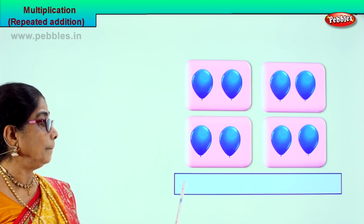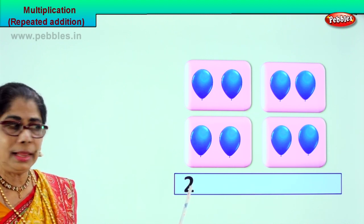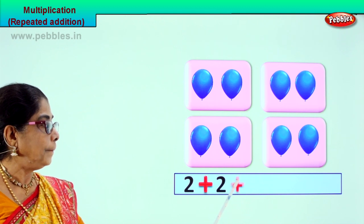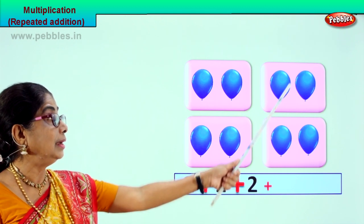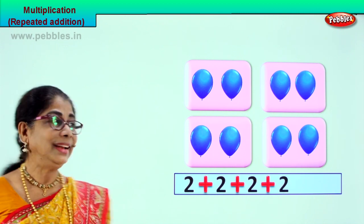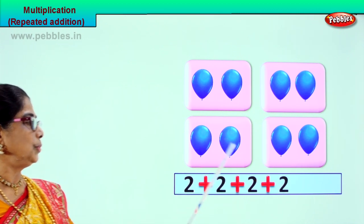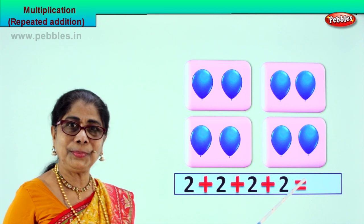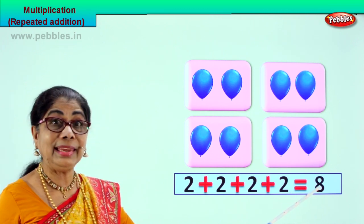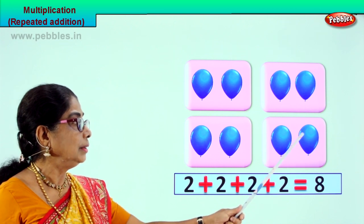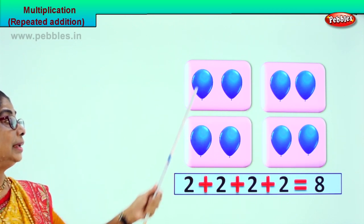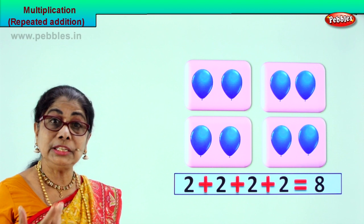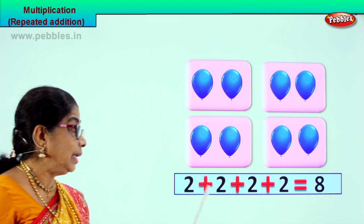So let's put two here. What is multiplication? Repeated addition. So two plus two plus two plus two. Four times two. Equal to? Eight. Let's check if the answer is correct. One, two, three, four, five, six, seven, eight. Yes, correct!